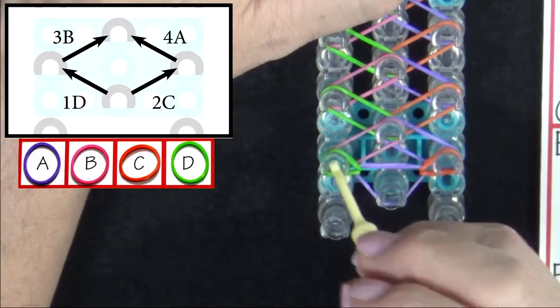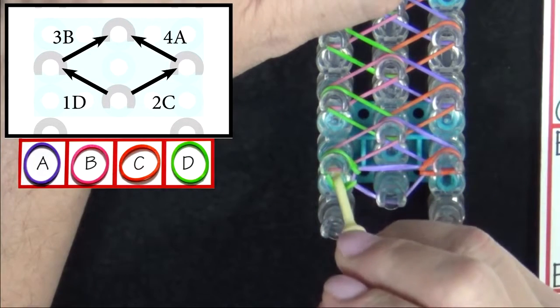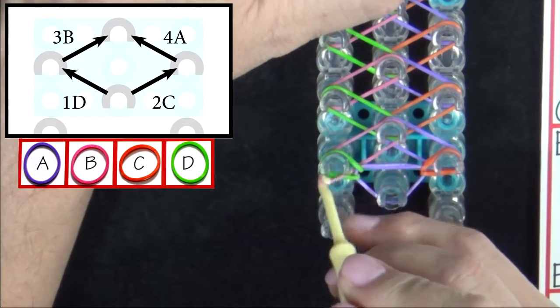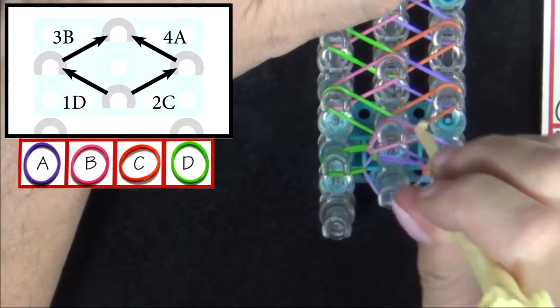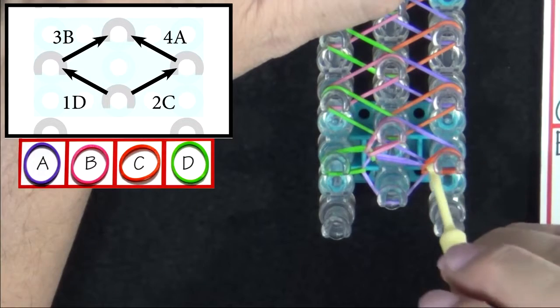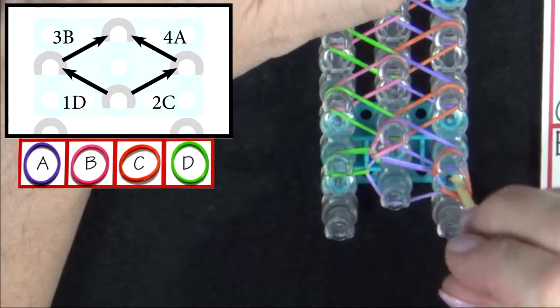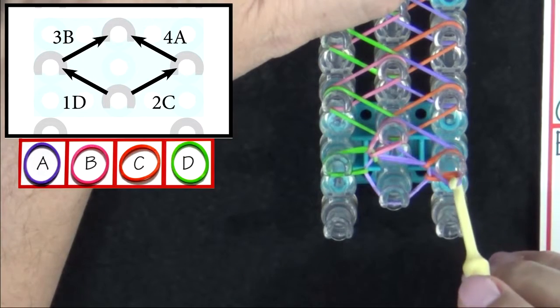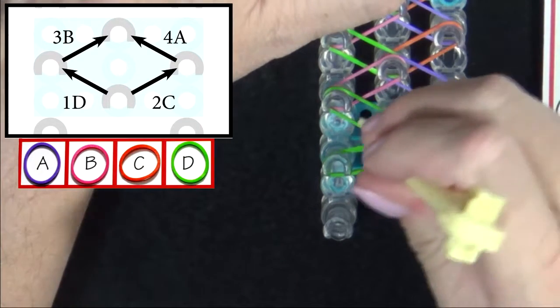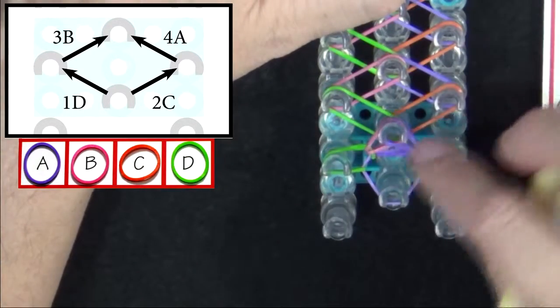Band 3B will be looped next. You're going to pull back the top band. Grab the B band and you will pull that to the center. Then over to the right we'll loop 4A. You reach in and pull that band above it back. Grab band 4A and pull it to the center. We've looped our first diamond.